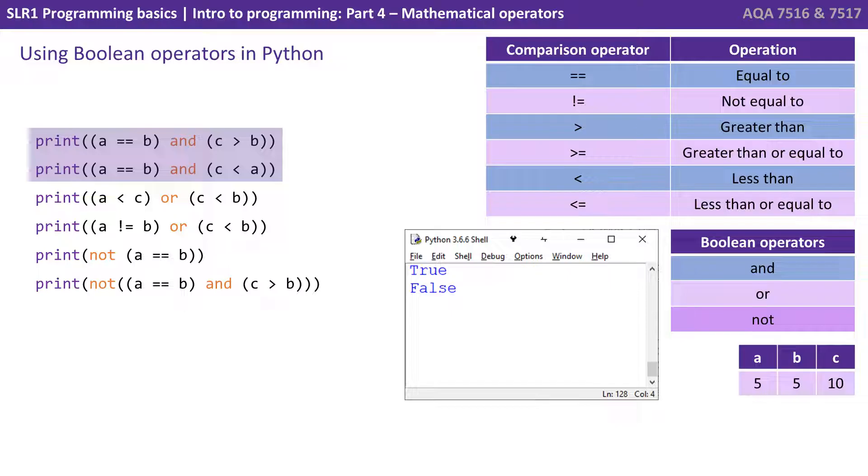We can, of course, combine the various different operators we've been looking at. So here we're combining comparison operators with Boolean operators. So A is equal to B. Well, we know that bit is true because A is 5 and B is 5. The second part there says C is greater than B. Well, C is 10 and B is 5, so that bit's true. So what we've got here is two trues. We then use the AND operator, true AND true. An AND operator needs both parts to be true for the result to be true. So true AND true is true.